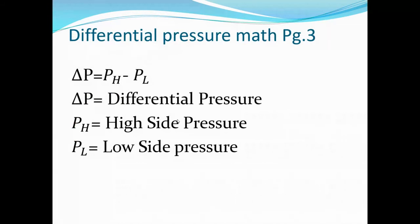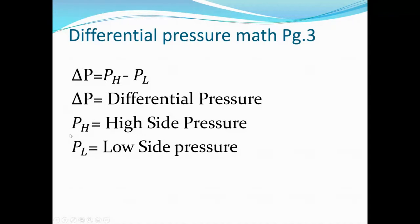A good way to think about a differential pressure transmitter is that it has a high pressure side and a low pressure side. The range that dictates the level indication is the difference in pressure sensed on the high side versus the low side — that's the differential pressure calculation. This compartmentalizes the transmitter into two calculations: a high cell calculation and a low cell calculation, and the net change in differential pressure results from those numbers.